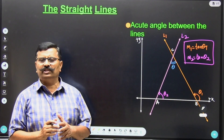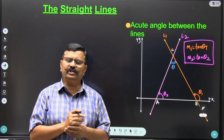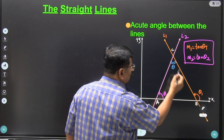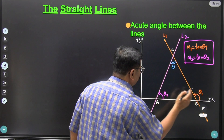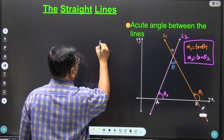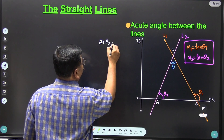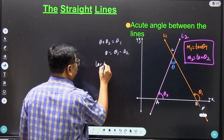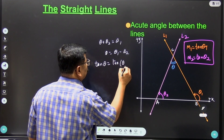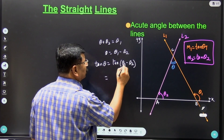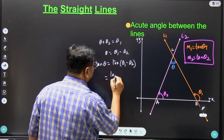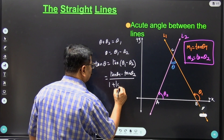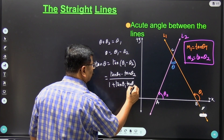Now we know the slopes of these two lines: M1 is the slope of the first line and M2 is the slope of the second line. To find the angle between these two lines, from the geometry we know that theta plus theta2 is equal to theta1. So theta is equal to theta1 minus theta2, therefore tan theta equals tan(theta1 minus theta2). Using the tan subtraction formula, this gives tan theta1 minus tan theta2, divided by 1 plus tan theta1 times tan theta2.